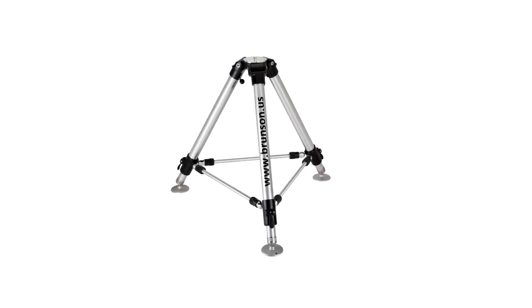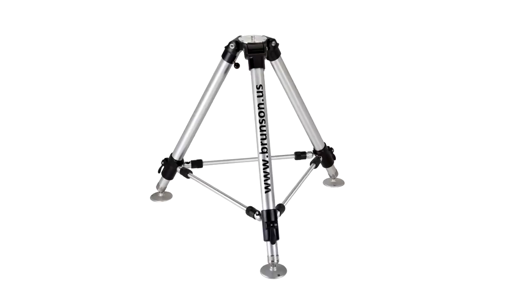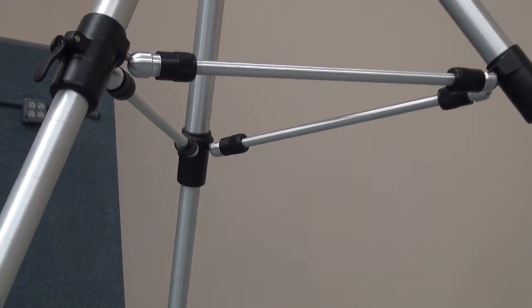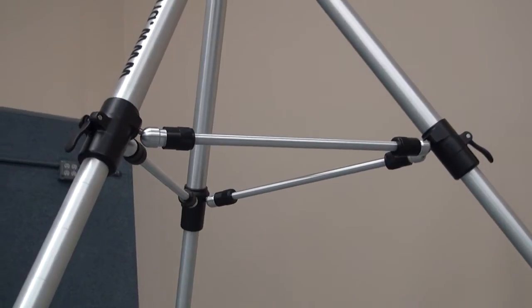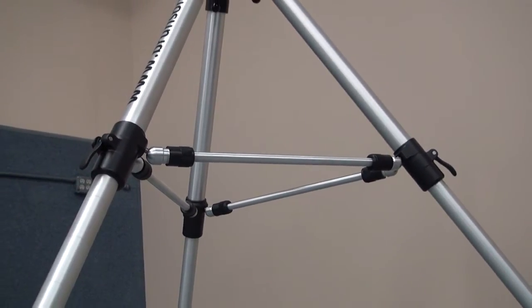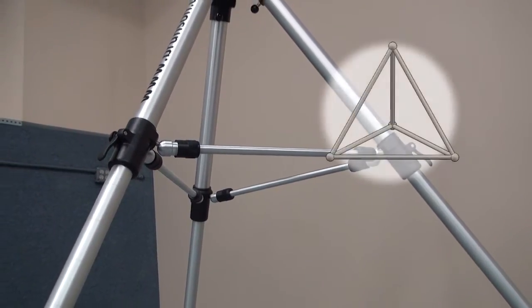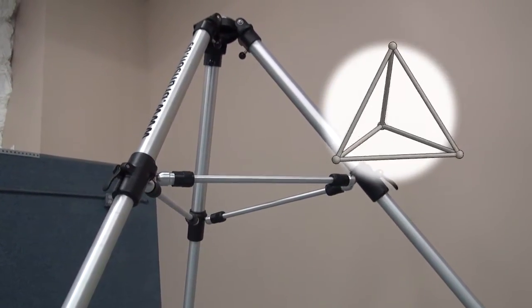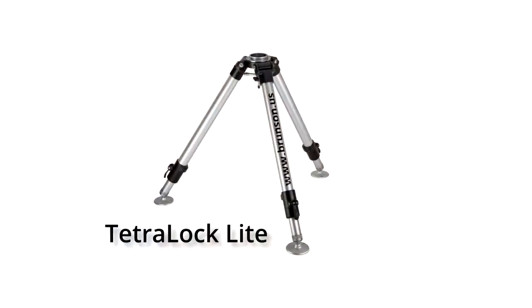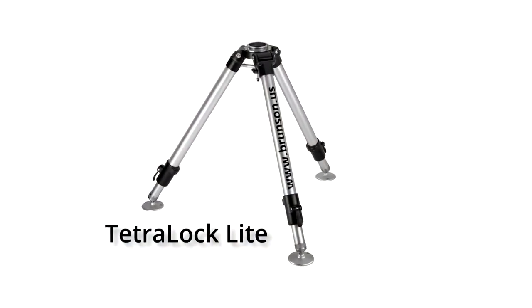The Brunson Tetraloc sets the standard in lightweight industrial metrology stands. When customers ask Brunson to engineer a lightweight industrial stand, they turn to one of the strongest structural elements known, a pre-stressed tetrahedron for ultimate stability. The result is the Brunson Tetraloc and the Tetraloc Lite made from aluminum and stainless steel.